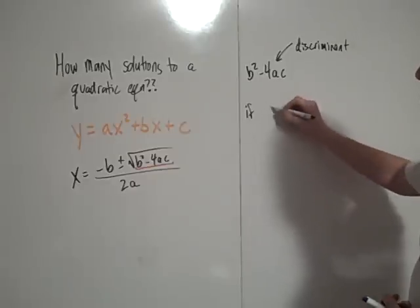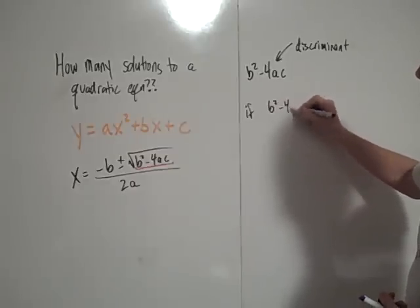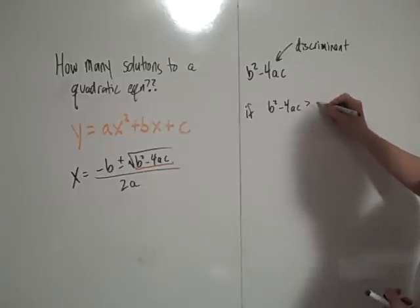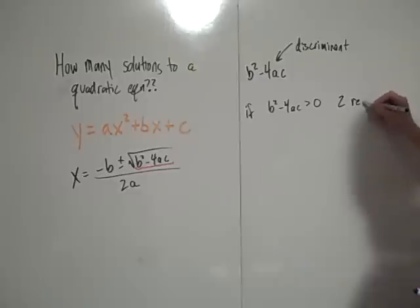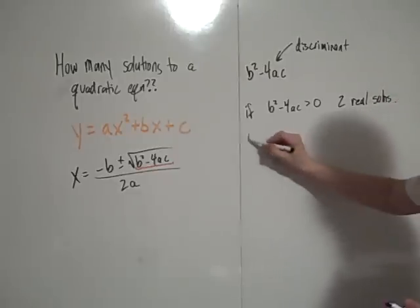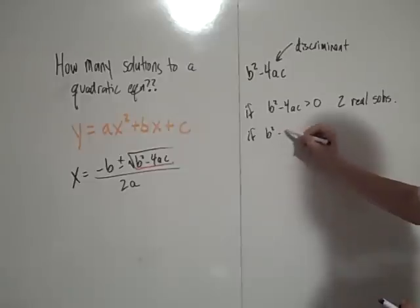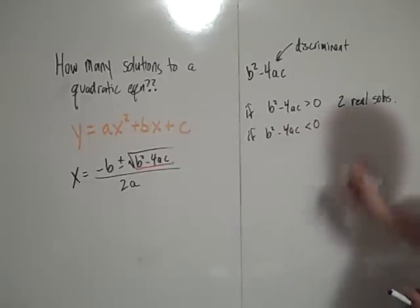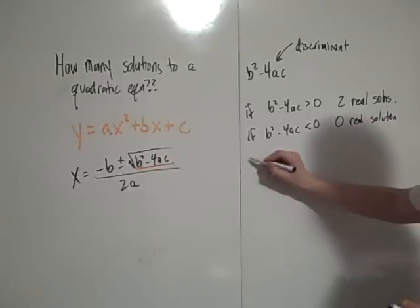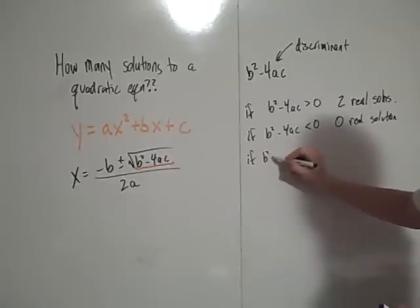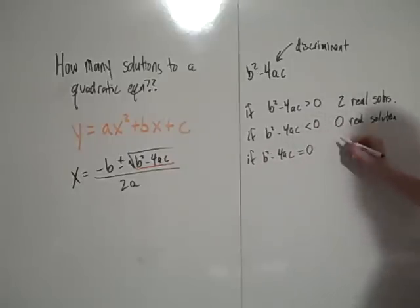So if b squared minus 4ac is positive — bigger than 0 — then this implies that there are two real solutions. If b squared minus 4ac is less than 0, is negative, then there are 0 real solutions. And if b squared minus 4ac is equal to 0, there is one real solution.